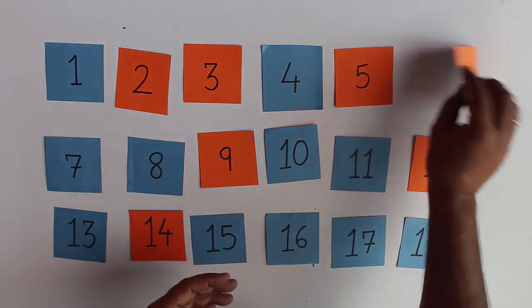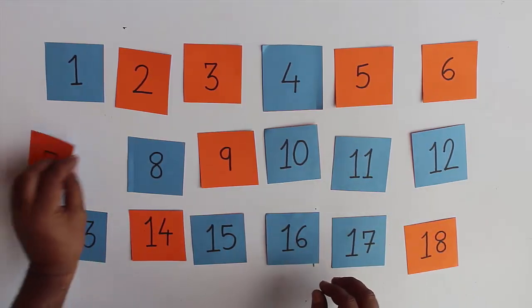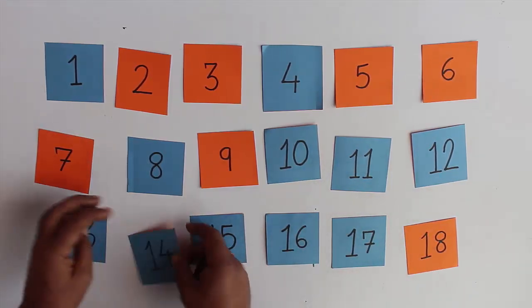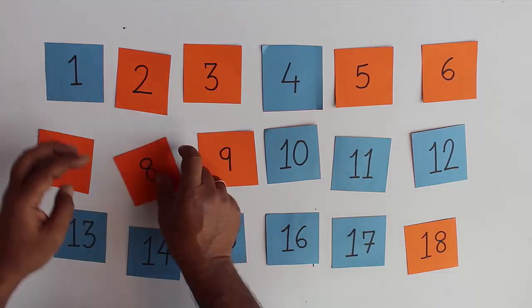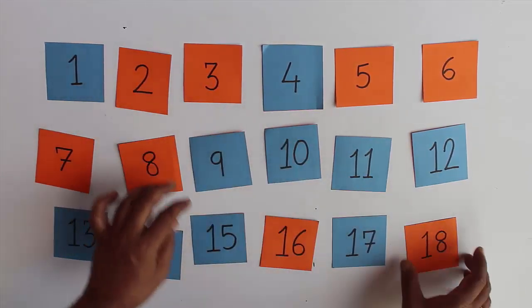Now every sixth card: 6, 12, and 18. Now every seventh card: 7 and 14. Now every eighth card: 8 and 16. Every ninth card: 9 and 18.